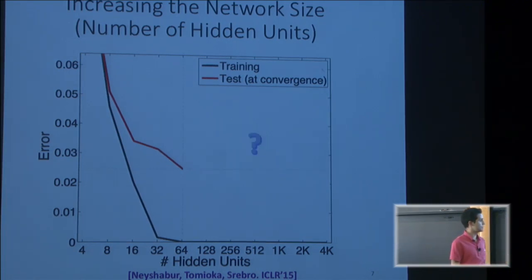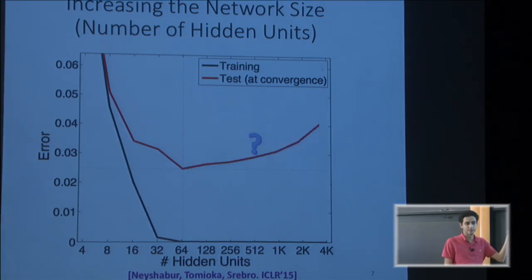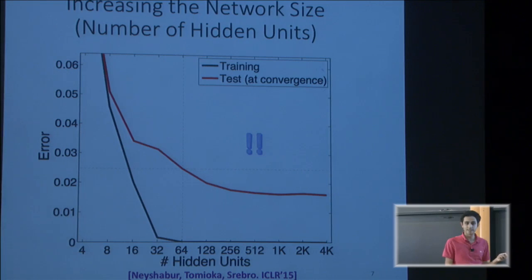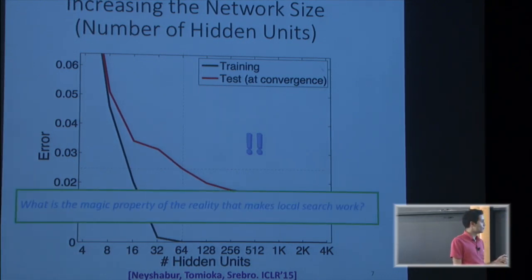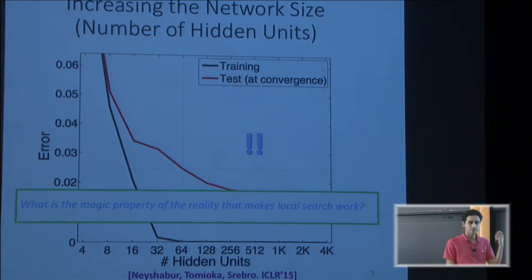After fitting the training data, the expectation is that larger models will overfit more and test error will go up — this is what introductory machine learning courses show. But actually, when I increase the model size further, I still get better test error. The theorems are true, so what's going on? We always get zero training error regardless of model size, and generalization actually gets better — the opposite of what we expect.